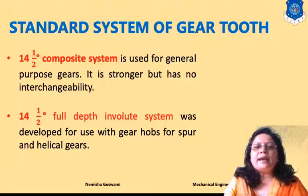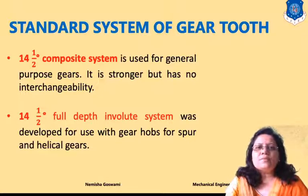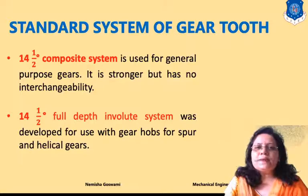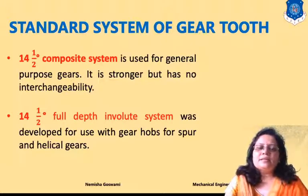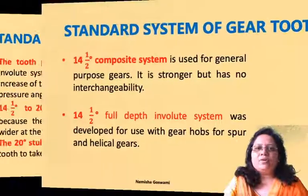The 14 and a half degree full depth involute system is used for particular spur and helical gears. Spur gears have shafts that are parallel to each other, while helical gears have teeth at some angle with respect to the shaft axis, with shaft axes still parallel. This system is generally used for helical gears.